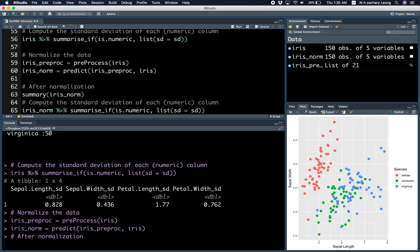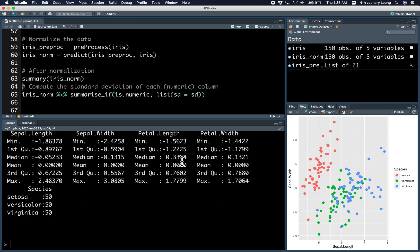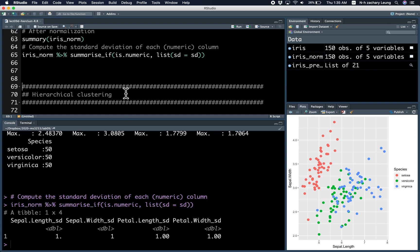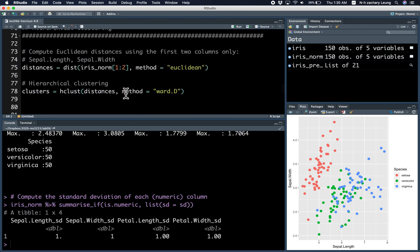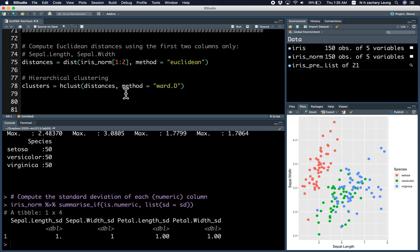After normalization, you see that the mean is zero and the standard deviation is one. Here's how you perform hierarchical clustering. You compute the distances. In this case, we only want to use the first and second column, so that's why we wrote this here.